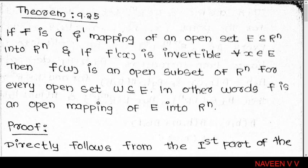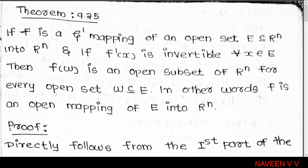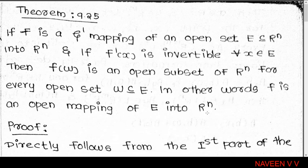Theorem 9.25: If f is a C¹ mapping of an open set E, a subset of Rⁿ, into Rⁿ, and if f'(x) is invertible for all x belonging to A, then f(W) is an open subset of Rⁿ for every open set W subset of E. In other words, f is an open mapping of E into Rⁿ.